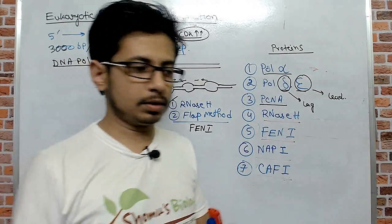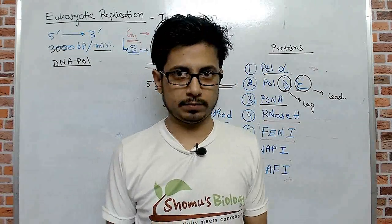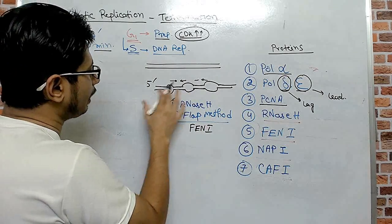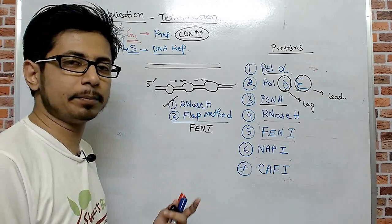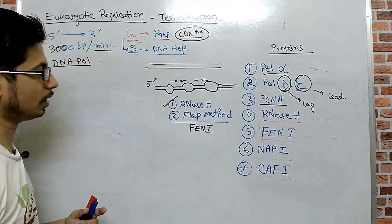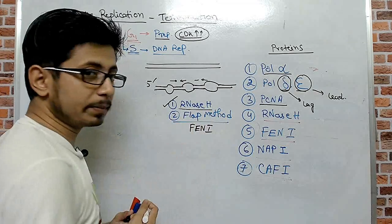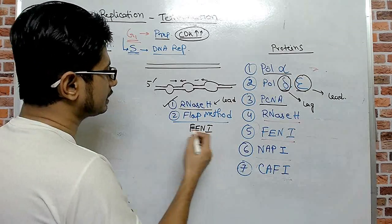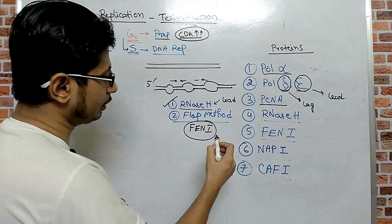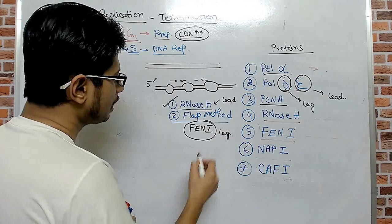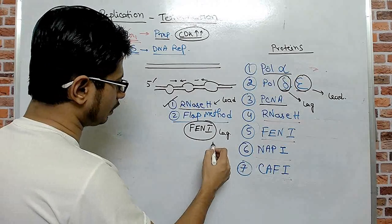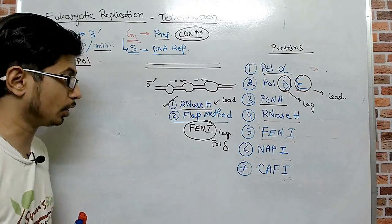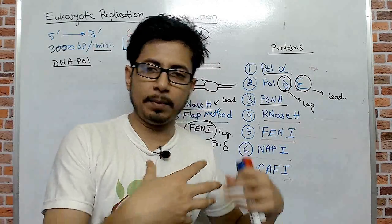As previously discussed, there are multiple replication bubbles in eukaryotic DNA. There are two processes that DNA polymerases use to end polymerization: one is the RNaseH-mediated method done in the leading DNA strand, and the other is the flap extension method carried out by the FEN1 protein done in the lagging strand — FEN1 terminates Pol delta, and RNaseH completes polymerase epsilon.